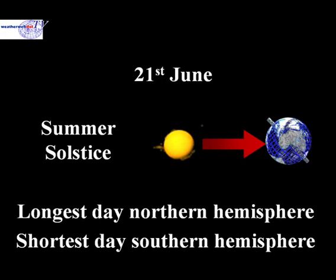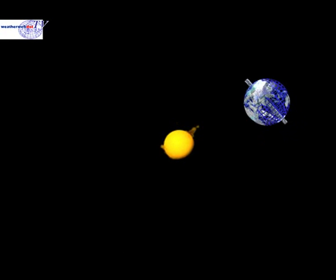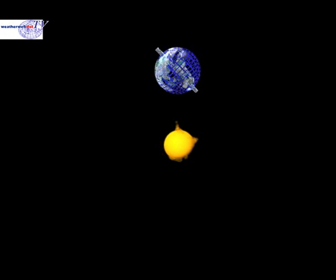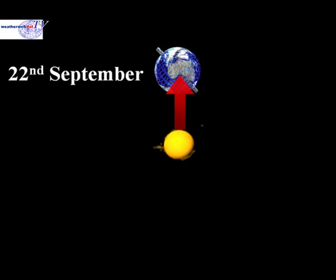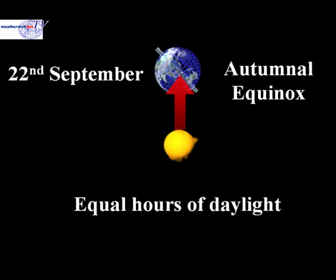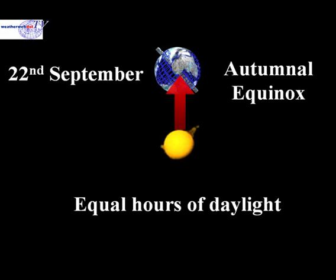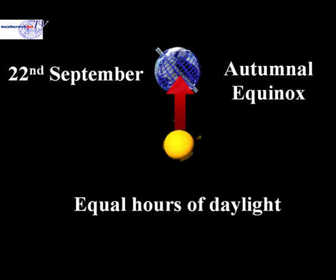Let's move on by a further three months, and our cycle completes with the Sun once again shining over the equator. This is the position around the 22nd of September, and is called the autumnal equinox. Once again, we get equal hours of daylight in both the Northern and Southern Hemispheres — the North heading towards winter, the South heading towards summer.